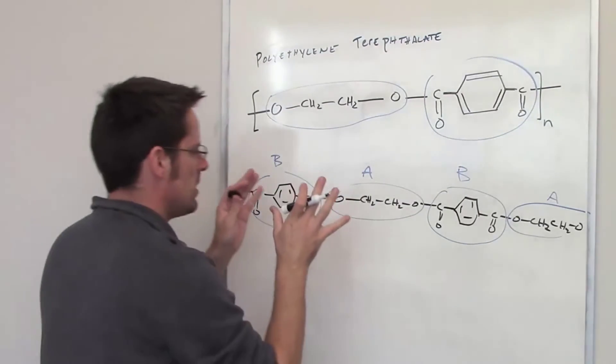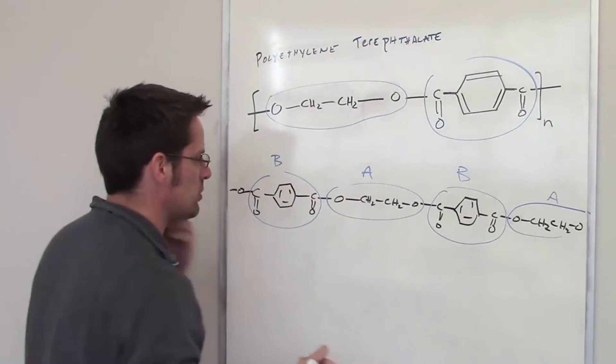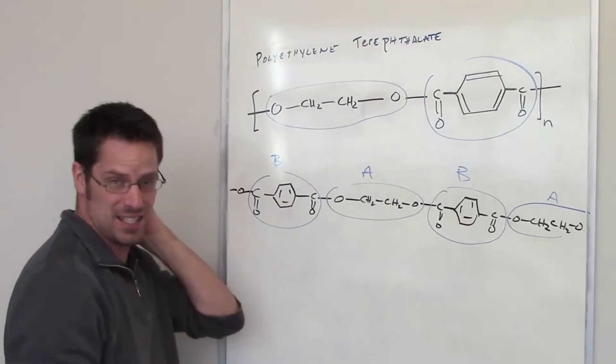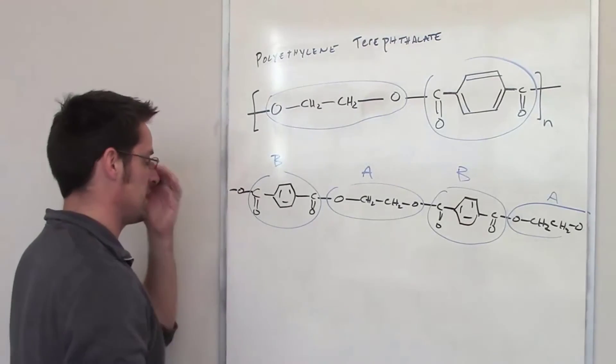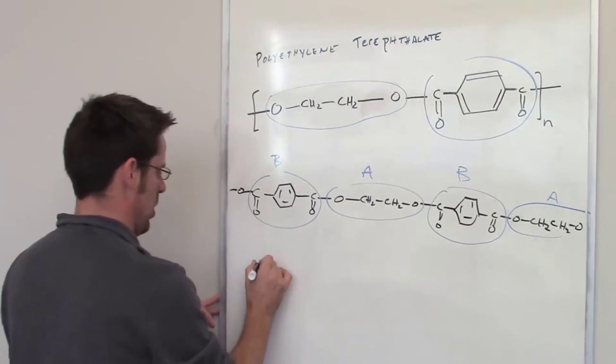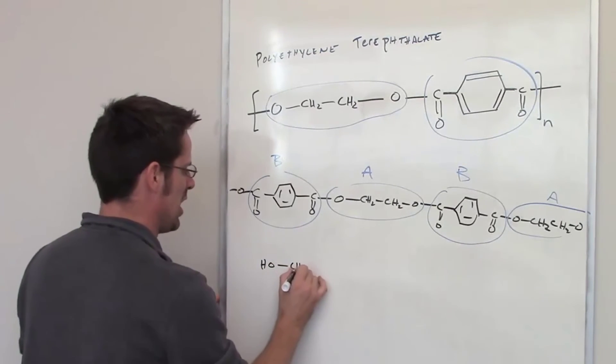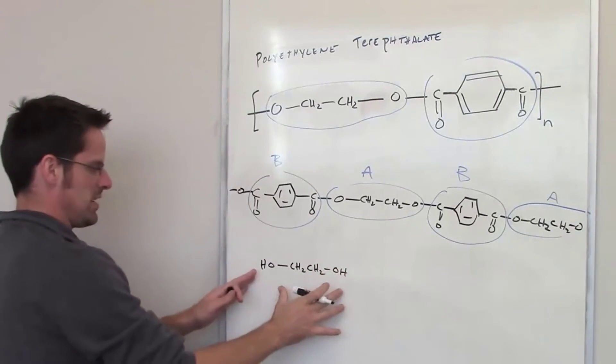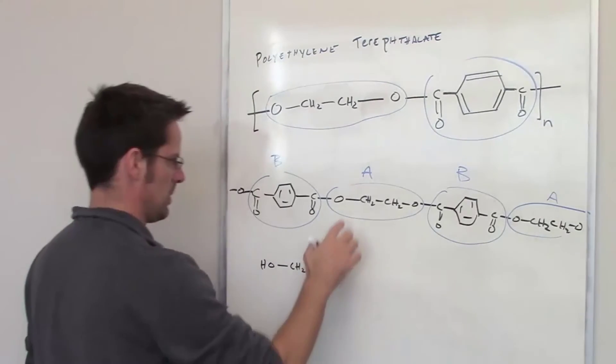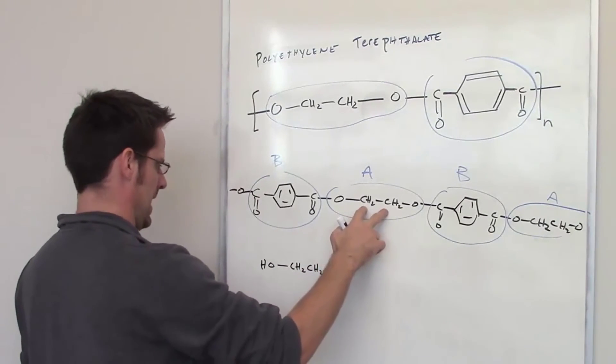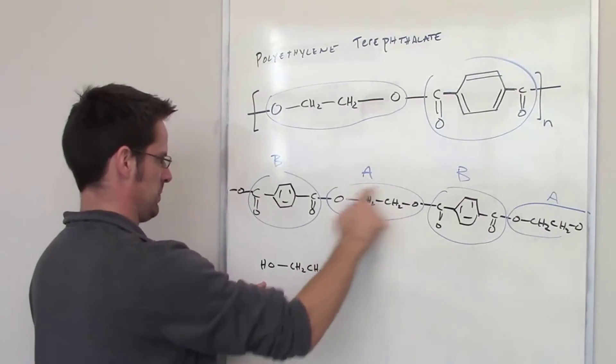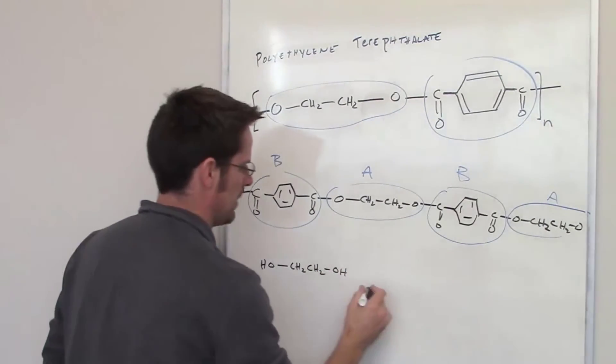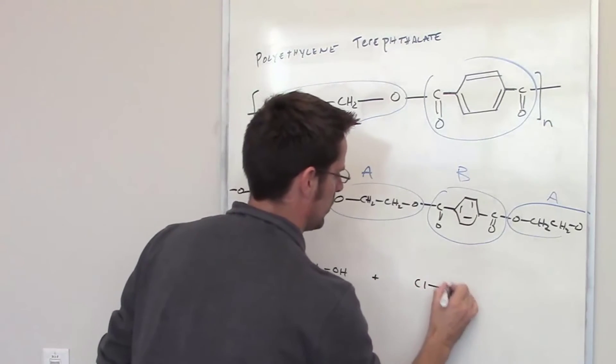So the individual monomers that are used to construct this are very analogous to nylons, where I've got an amine and a diacid chloride, or a diamine and a diacid chloride. These are a diol. So a diol is just like a diamine, except instead of having two NH2s, I have two OHs. So I'm going to take a diol that looks exactly like this part A, except I put hydrogens on the ends of the oxygens, and then I react that with a diacid chloride.